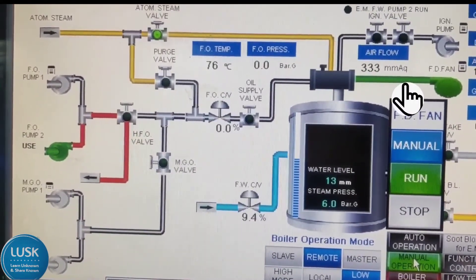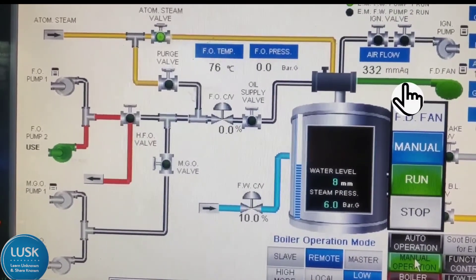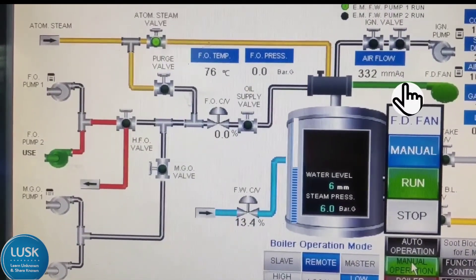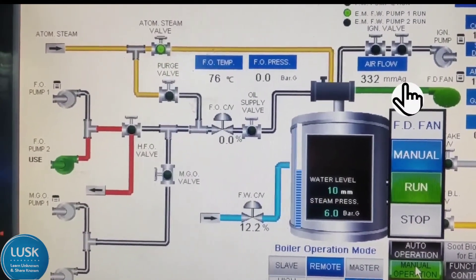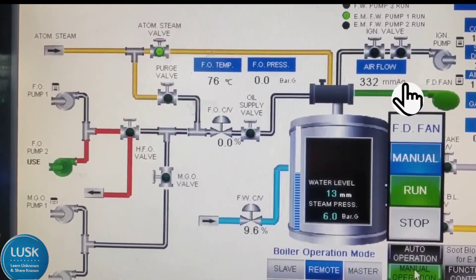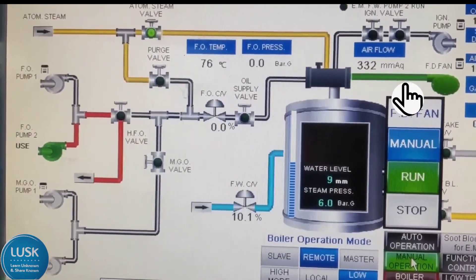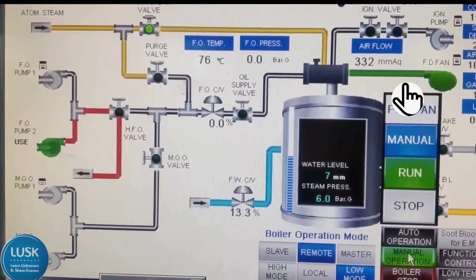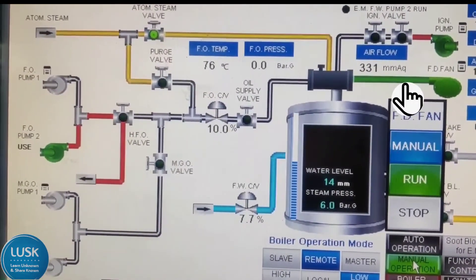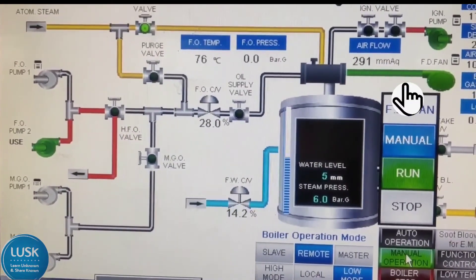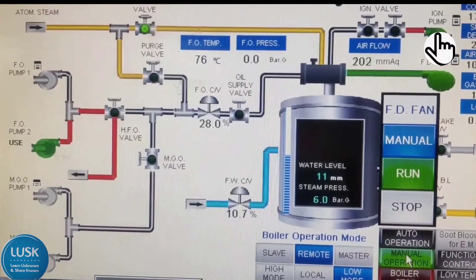Why is purging happening? Because there will be some flammable gases inside, or maybe oil is dripping from a previous firing. To exhaust that flammable gas, when we forcefully compress air inside the boiler, those gases will go via the exhaust. That is why purging is done at each and every initial firing. Now you can see — as soon as the flap started reducing, the ignition pump started.